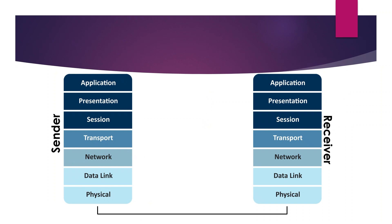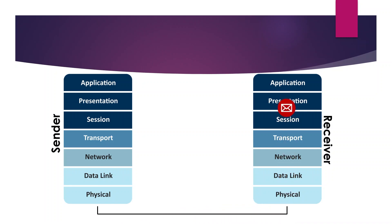To summarize how it all works: data starts at the Application layer where it's generated, moves to the Presentation layer where it's formatted, then the Session layer where a connection to the other system is established. The Transport layer decides whether to use TCP or UDP, and the Network layer determines whether the destination is local or remote and calculates the route.